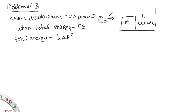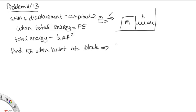We can assume that when the bullet hits the block and gives it momentum, at that point in time it's going to have its maximum velocity. So all its energy will be in the form of kinetic energy, and the total energy will equal the kinetic energy at that point in time — as there's no energy stored in the spring at that moment.